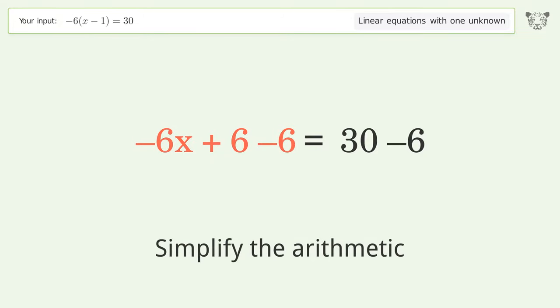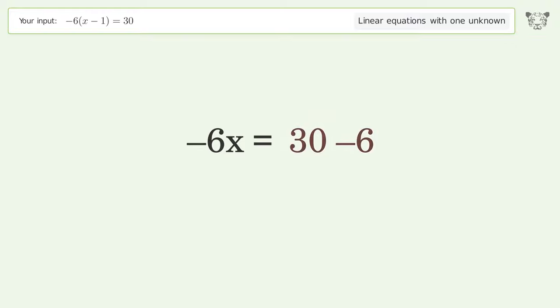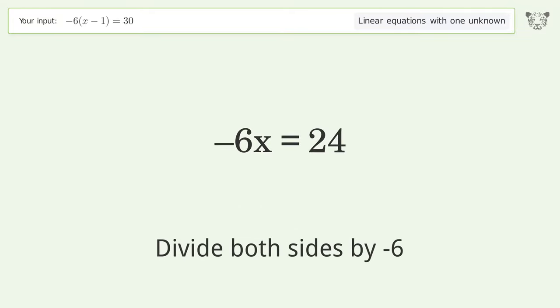Simplify the arithmetic. Isolate the x. Divide both sides by negative 6.